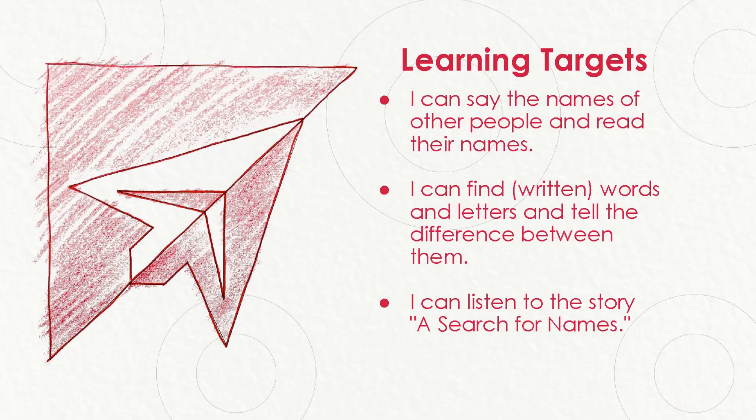There are three learning targets for our lesson today. The first one says: I can say the names of other people and read their names. The second target says: I can find written words and letters and tell the difference between them. And the last target says: I can listen to the story, A Search for Names.